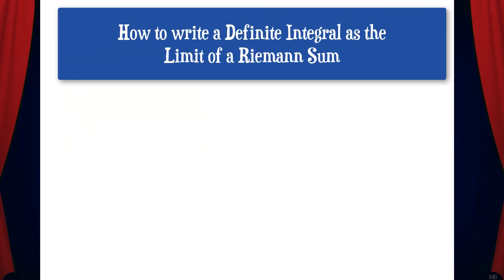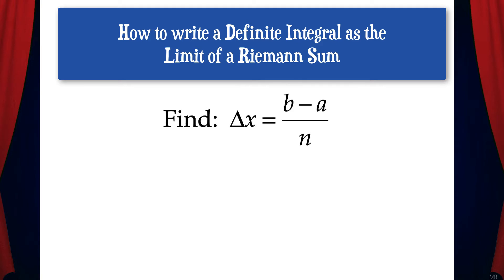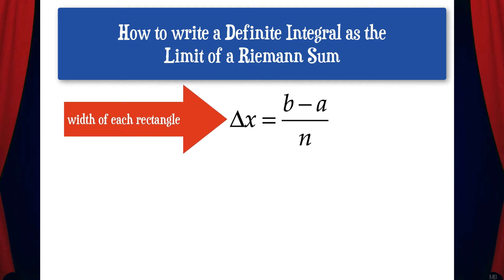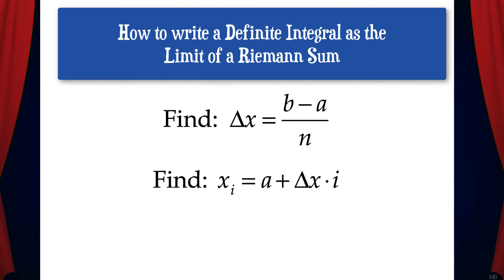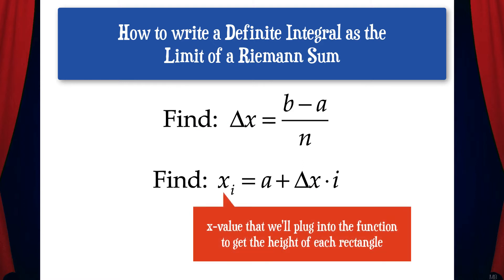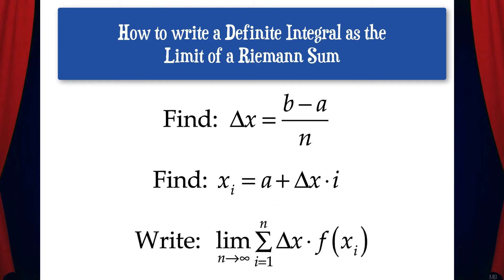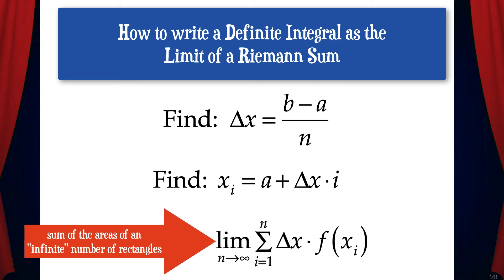Now let's look at a strategy for how to write a definite integral as the limit of a Riemann sum. The first thing we need to do is find delta x, which is b minus a over n — the width of each rectangle. Then we need to find x sub i, which is a plus delta x times i. Each x sub i is the x value we plug into the function to get the height of each rectangle. Then we write the final answer: the limit as n goes to infinity of the sum of delta x times f of x sub i, where i goes from 1 to n. This represents the sum of the areas of an infinite number of rectangles.